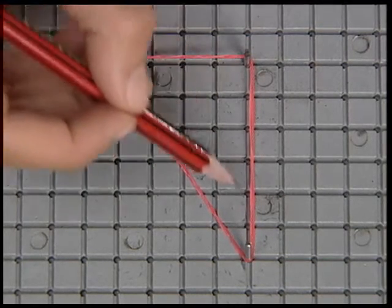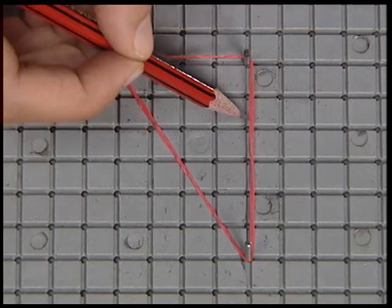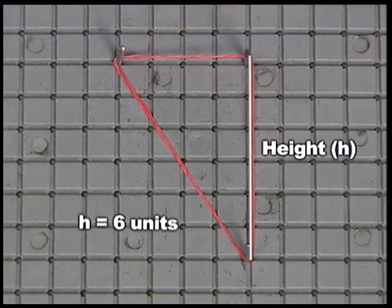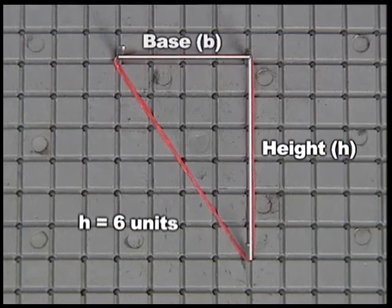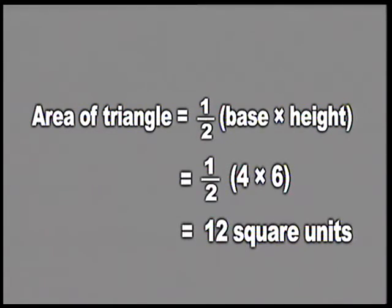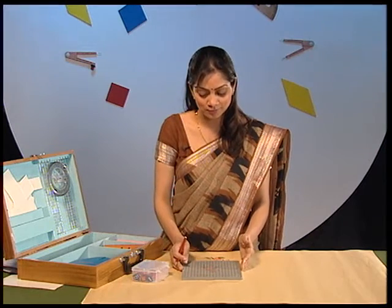The height of the triangle is six units and the base of the triangle is four units. You all know that the area of a triangle is given by half base into height, which comes out to be twelve square units. Wasn't it amazing to know that the area formed by counting squares is the same as the area formed by the dimensions? You can verify this property by making many right-angled triangles of your choice using this geoboard.